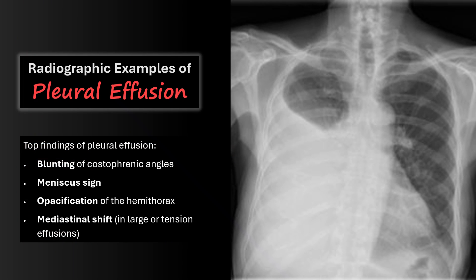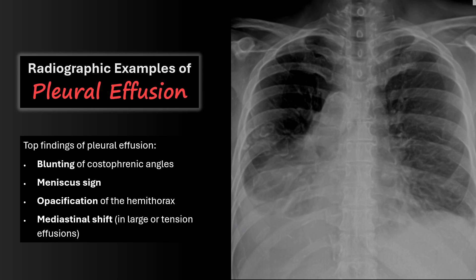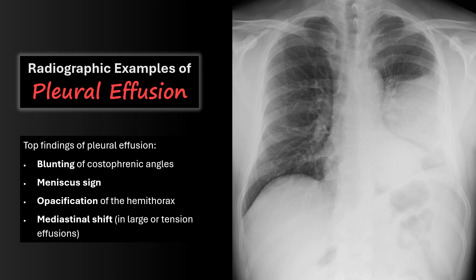Let's look at a few more examples. In the right middle and lower lung field you can see a large opacification and blunting of the costophrenic angle with the meniscus sign. Here's another example showing poor visualization of the left costophrenic angle due to pleural effusion. And one more — in the left lung field you can see poor visualization of the left costophrenic angle and opacification of the lower lung field.